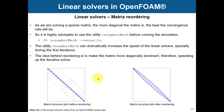There is also the utility renumberMesh, which I recommend you always use. What it does is reorder the linear system to make it more diagonally dominant. When you have a more diagonally dominant system you converge faster. This is the original linear system — for example a driven cavity case — and after using renumberMesh, the convergence is much faster. I always recommend using renumberMesh; you can also run it in parallel.